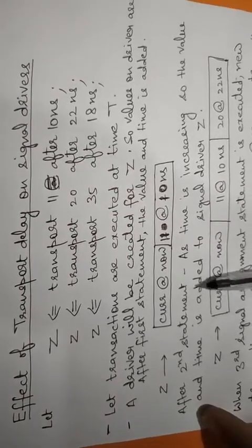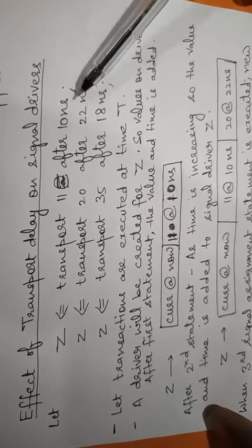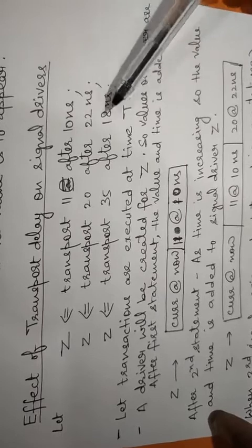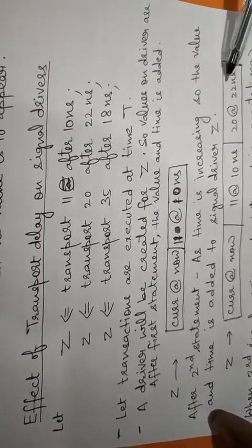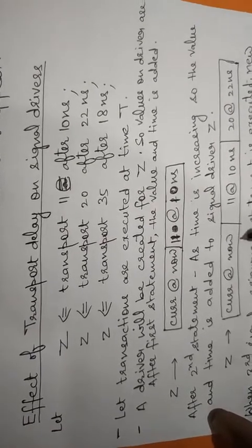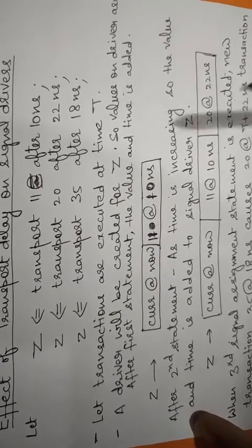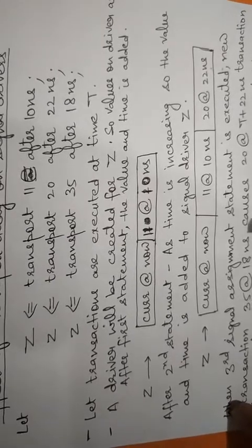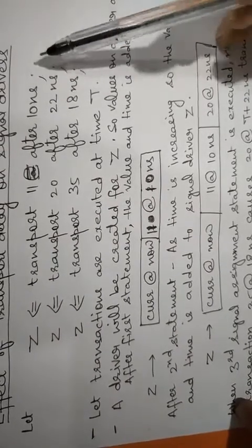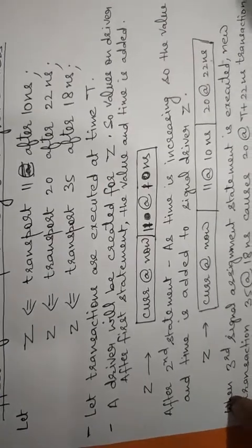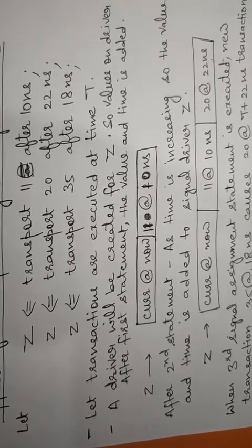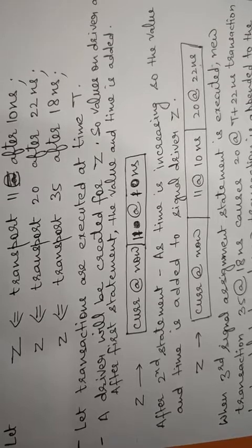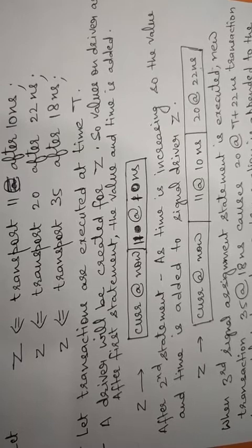Then the second statement will be executed. It will check whether the time period of the second statement is higher than or equal to the first statement. If the time period of the second statement is equal or greater, that statement will be added to the signal driver. Here, current at now and 11 at 10 nanoseconds will be retained, and from the second statement the value is 20 at 22 nanoseconds, which will be stored. Then when the third statement comes, its time period is less than the second statement but greater than the first. In this case the signal driver retains values in ascending order of time, so it deletes the transaction 20 at 22 nanoseconds, and the statement 35 at 18 nanoseconds is added. This is how the signal driver is formed in case of transport delay.